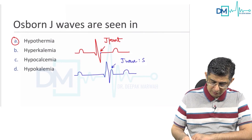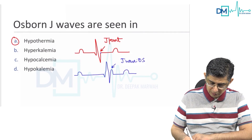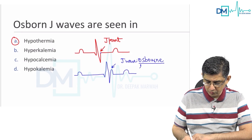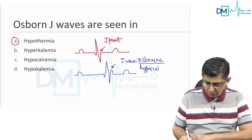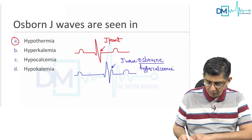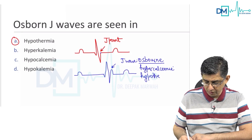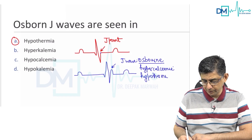J wave or Osborne wave is not only seen in hypothermia but is also seen in patients of hypercalcemia. So there are two causes for development of J wave in a patient: hypercalcemia and hypothermia.